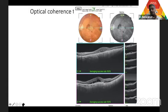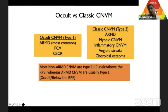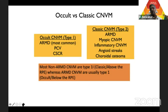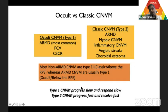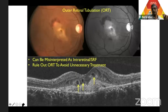Myopic CNVM requires very few injections, unlike ARMD. Type 3 is retinal angiomatous proliferation, which is intraretinal. For type 2 CNVM above the RPE, main causes are myopic, angioid streaks, choroidal osteoma, or parafoveal telangiectasis — they tend to progress fast but also resolve with fewer injections. If a patient asks whether they can delay an injection, you need to decide which type of CNVM you are dealing with and how many injections to prognosticate.